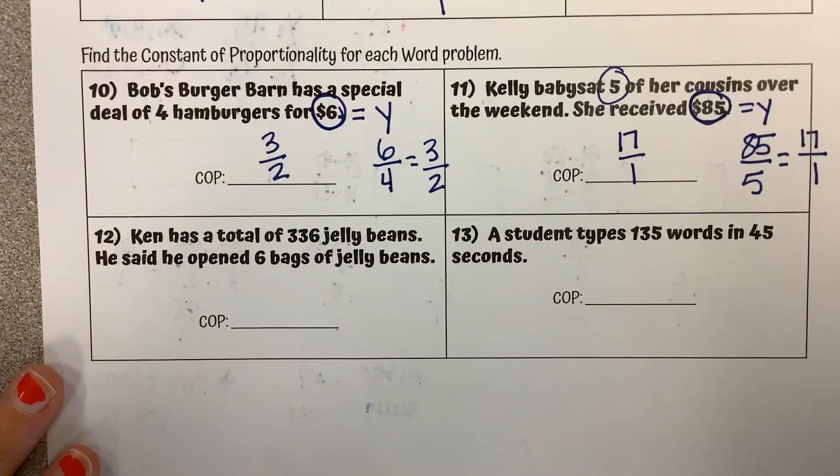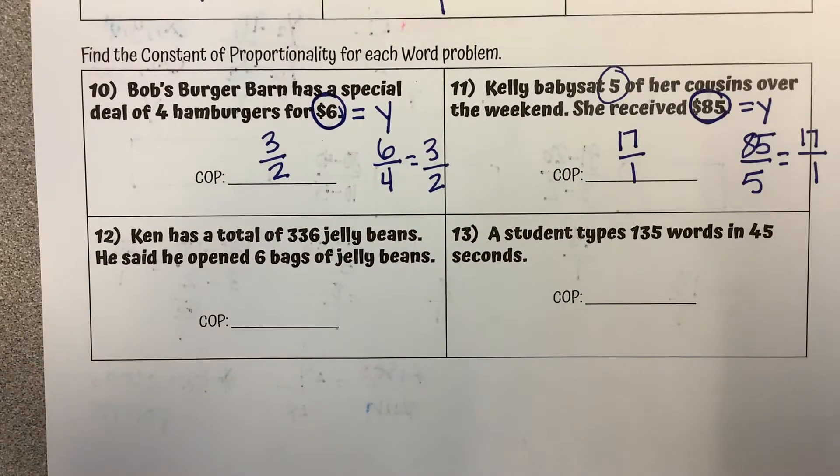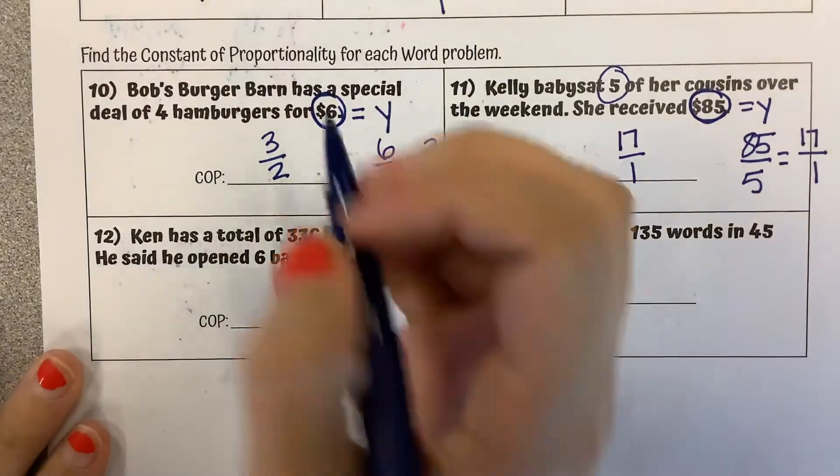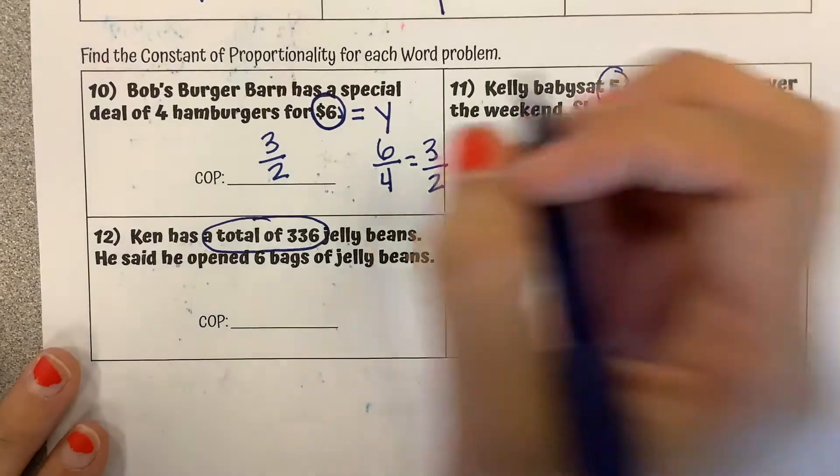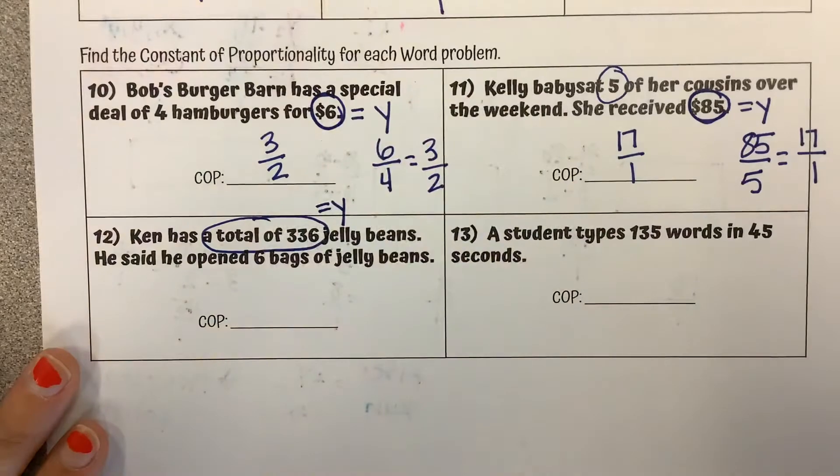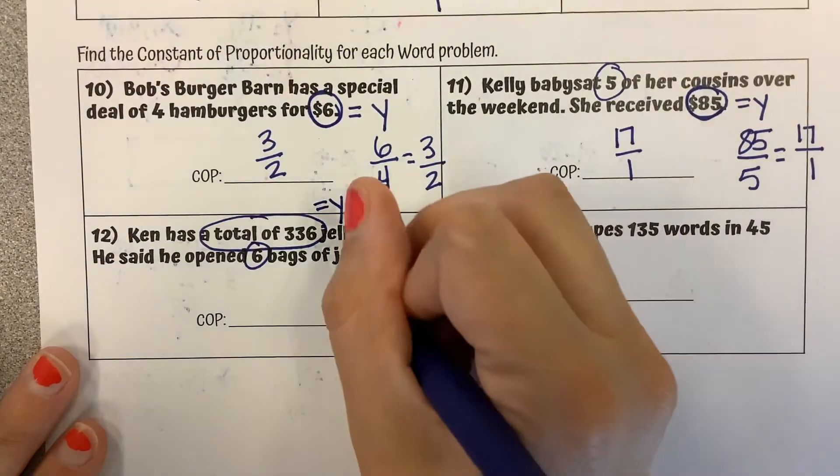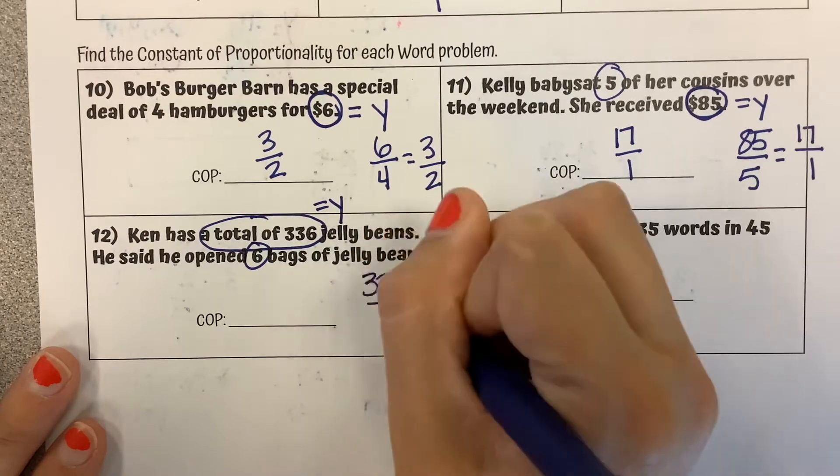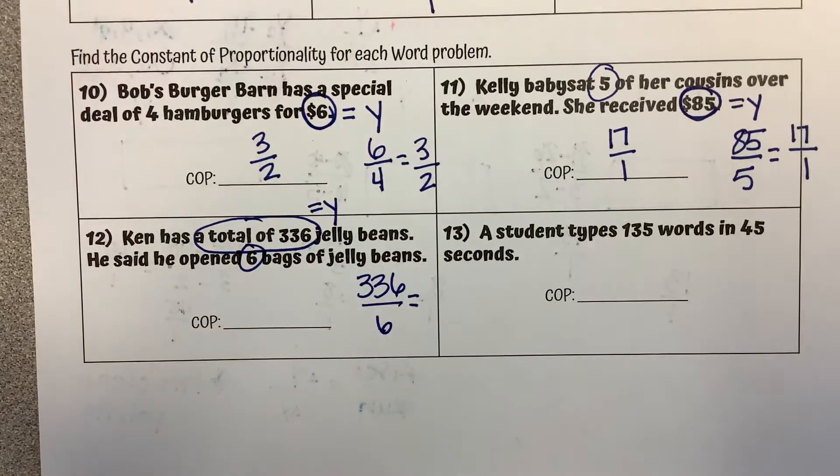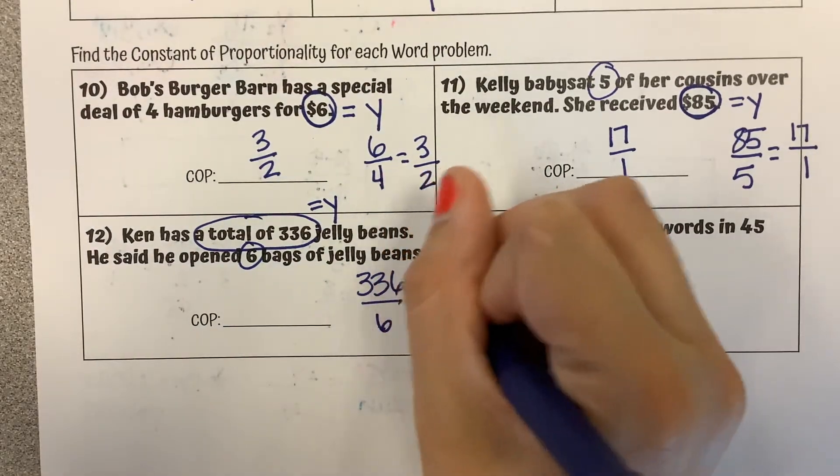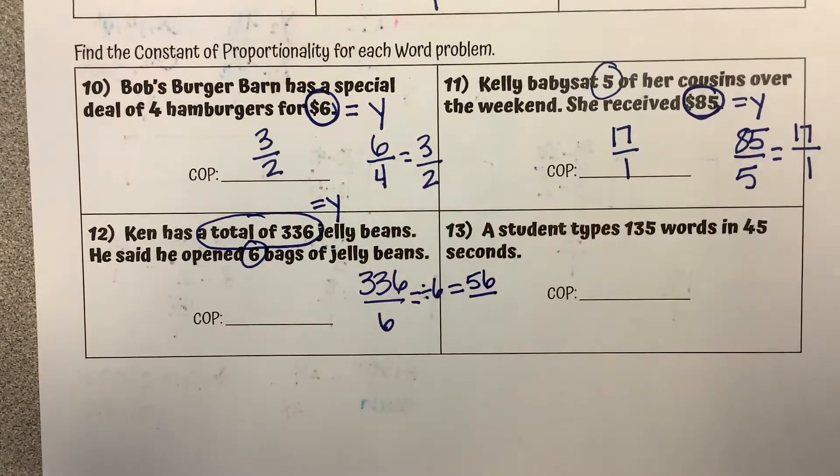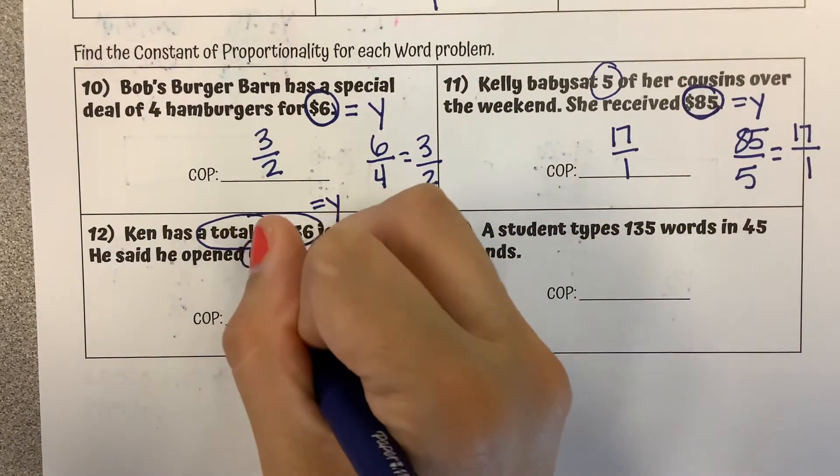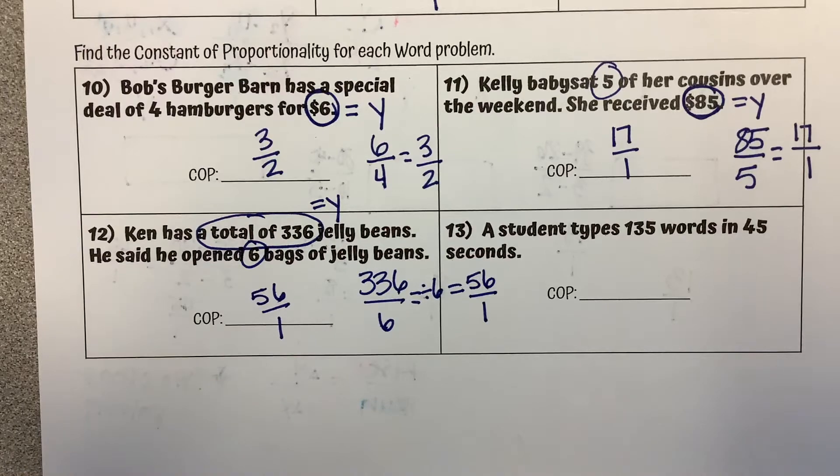Ken has a total of 336 jelly beans. He said he opened 6 bags of jelly beans. So our total amount is going to be our y compared to the other value of 6. So as my ratio I'm doing my y value of 336 over 6. Those can both simplify by dividing by 6. 336 divided by 6 is 56. 6 divided by 6 is 1. So our constant of proportionality is 56 over 1.